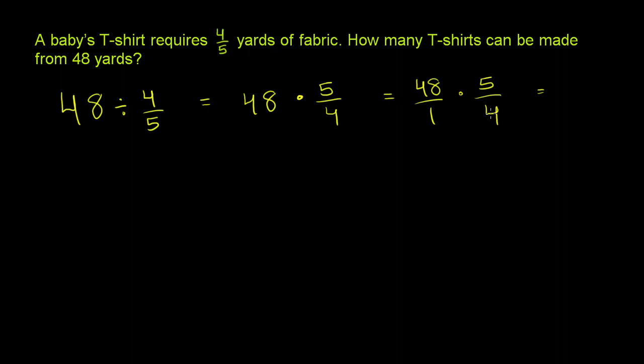We could divide the numerator and the denominator by 4. Or we could say, this is going to be equal to 48 times 5, whatever that is, over 4.